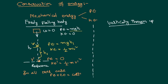Let us consider a body whose mass is equal to m. You have thrown it vertically upward with an initial velocity u. This is your reference point. At the reference point, being the body is on the ground itself, potential energy is equal to zero. But it is having some velocity, so it is having some kinetic energy. The total energy is nothing but half mu squared.